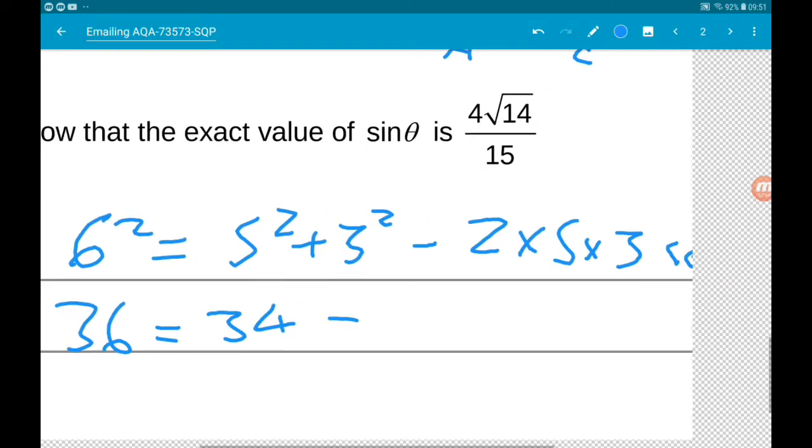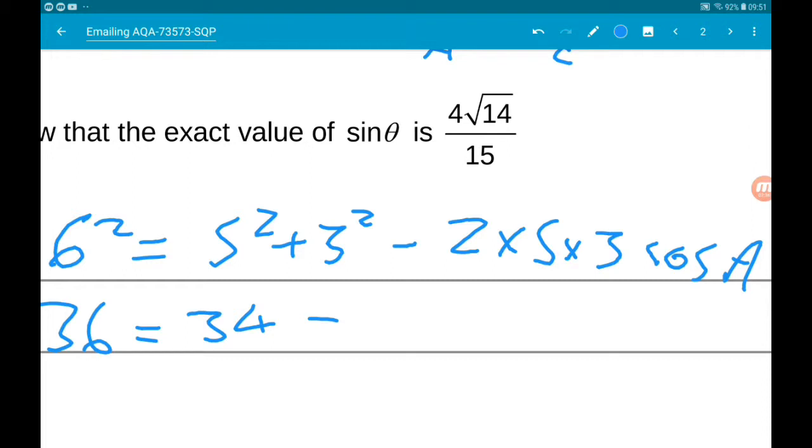And then minus 2 times 5 times 3 is 30. So we got minus 30 cos of A.